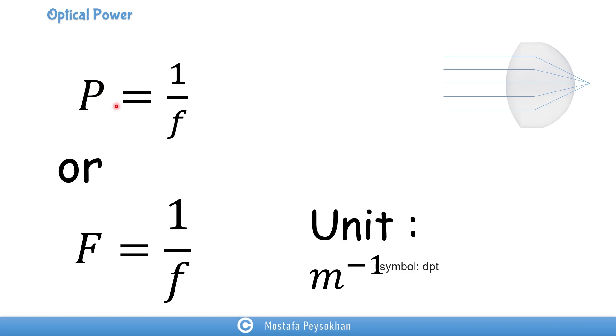In the other form, sometimes people use capital F for optical power. So we should be very careful about using capital F and not make a mistake to mix capital F with small f. So capital F is equal to one over f.